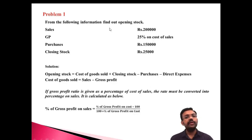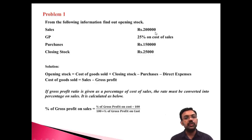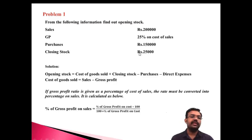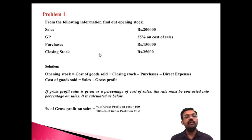Problem 1: From the following information, find out the opening stock. Given: Sales = 2 lakh, Gross Profit = 25% on cost of sales, Purchases = 1 lakh 50,000, Closing Stock = 25,000. We need to find the opening stock.